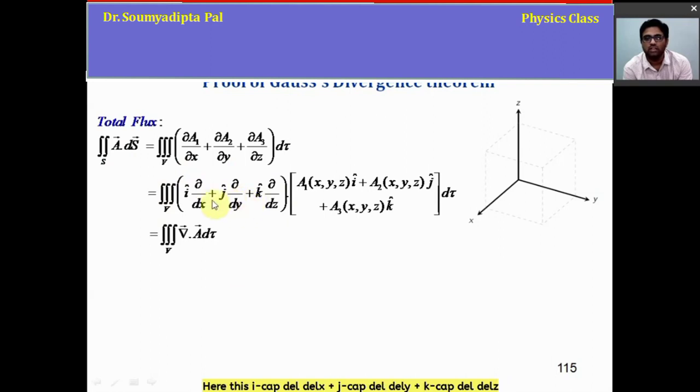Here this i cap del del X plus j cap del del Y plus k cap del del Z is actually called the del operator. And we get del dot A vector, similar to A vector dot B vector for two arbitrary vectors, only instead of the first vector we have the del operator here.